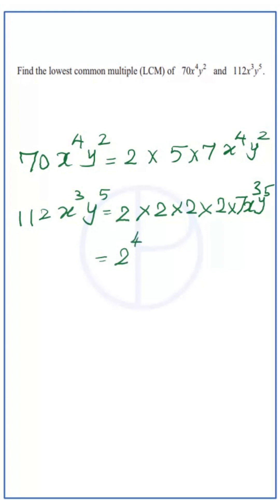Let's write this as product of unique factors: 2^4 times 7 times x^3y^5. Now list all the unique factors that appear in any of these expressions: 2, 5, 7, x, and y. For each distinct factor, identify the highest power it appears in any of the expressions.